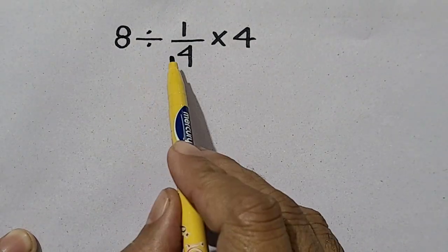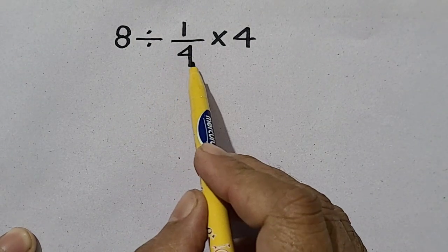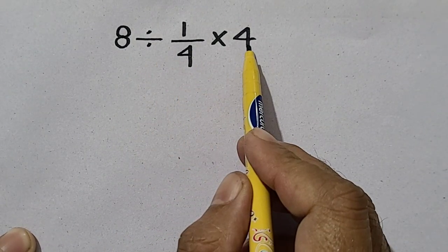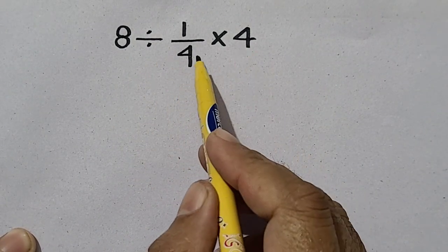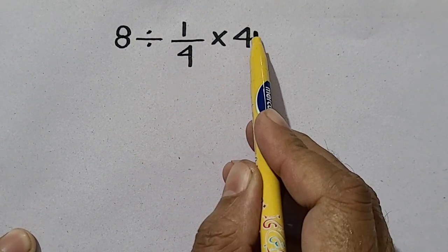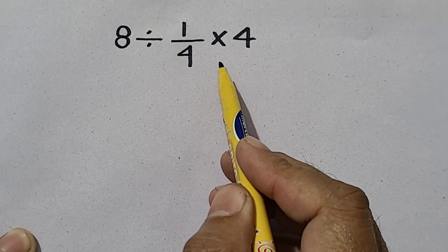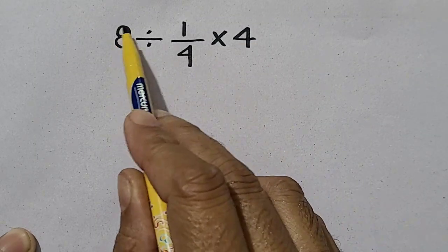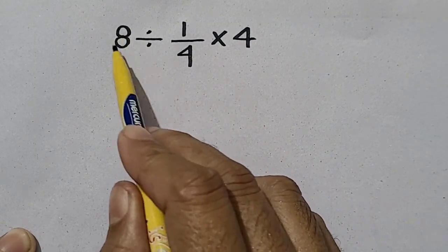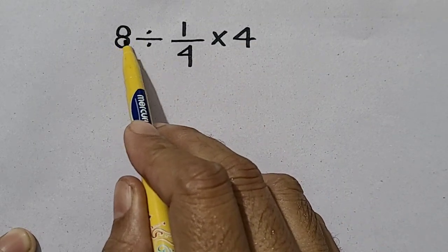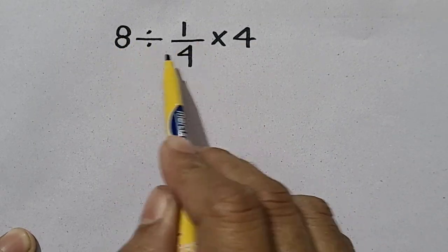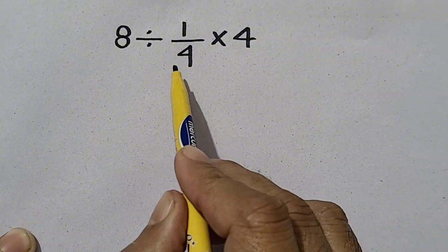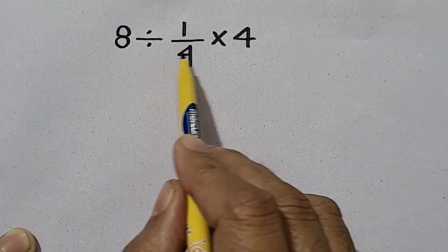8 divided by 1/4, times 4. Here, 4 and 4 are cancelled and the answer appears to be 8, but 8 is not the correct answer.